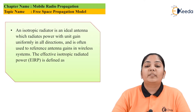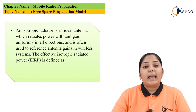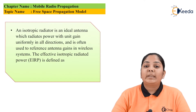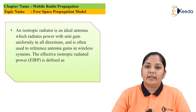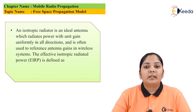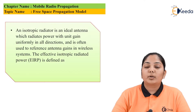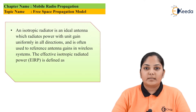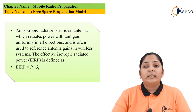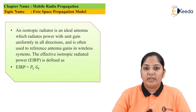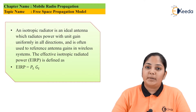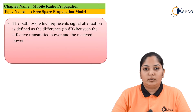An isotropic radiator is an ideal antenna that transmits in all directions with the same unit gain. This antenna is used as a reference for other antennas to understand their gain pattern. The effective isotropic radiated power, or EIRP, is defined as EIRP = Pt × Gt, where Pt is the transmitted power and Gt is the gain of the transmitting antenna.